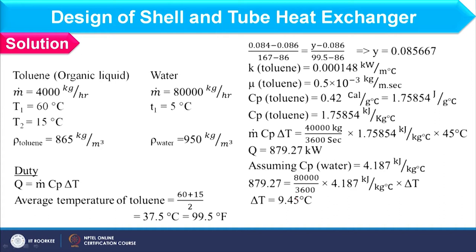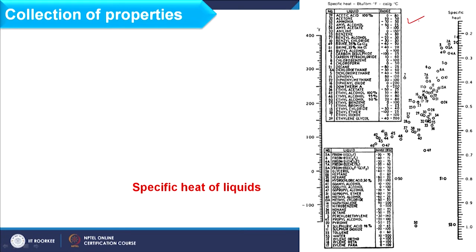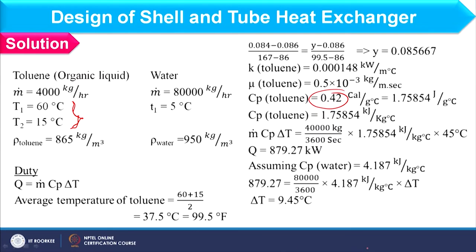To find the specific heat, we first average the temperature of toluene. T1 and T2 are 60°C and 15°C. At the average temperature, the Cp value or specific heat of toluene comes as 0.42, which you can find from the graph. Considering this, we can find out the heat duty of the exchanger as 879.27 kW. Making the energy balance, we can find the unknown outlet temperature of the water, which comes out to less than 40°C.